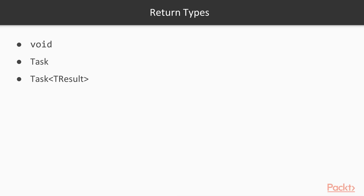In asynchronous programming, async methods can have three possible return types. These are void, task, and task of type T result. We will take a look at each return type.